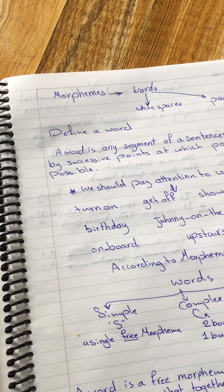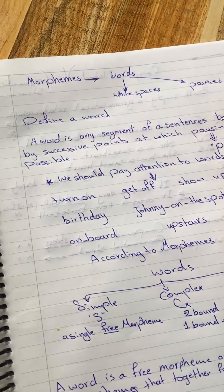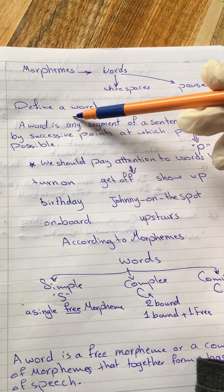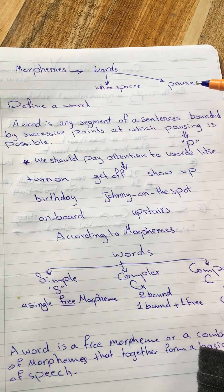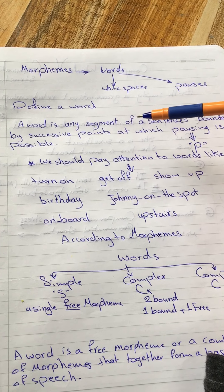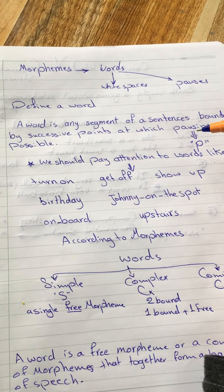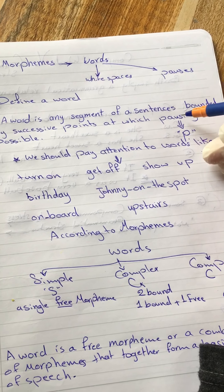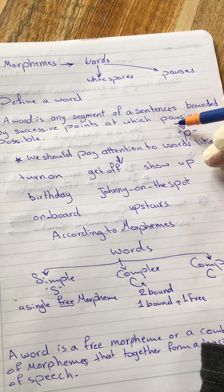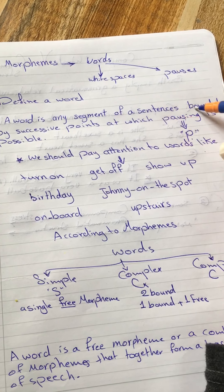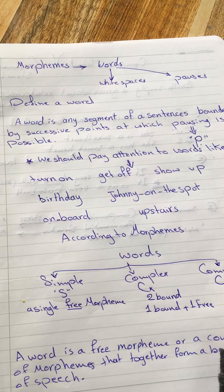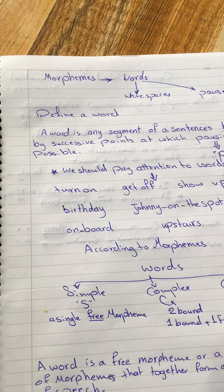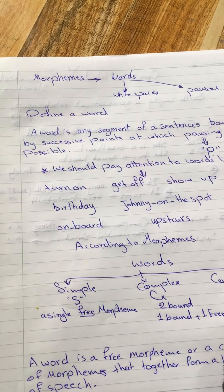According to this definition, a word is any segment of a sentence bounded by successive points at which pausing is possible — where P stands for 'pause.' However, sometimes I make pauses but I am still talking about one word.